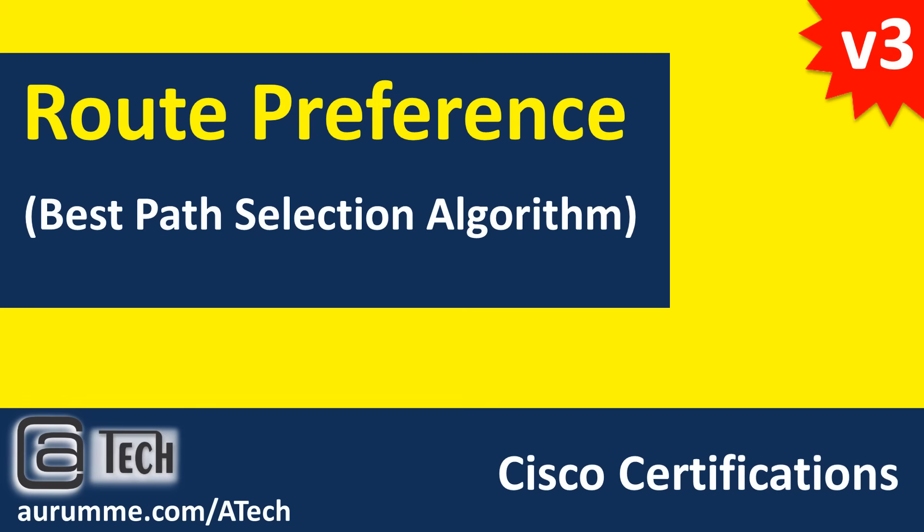Hello friends, welcome to another video on best path selection algorithm or route preference. When a router receives more than one route to the same destination, it has to choose one route for packet forwarding. It chooses the best path to the destination and attempts to install this path into the routing table. Let's discuss how routers select the best routes.